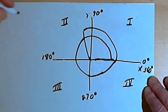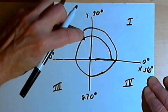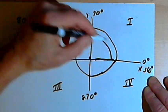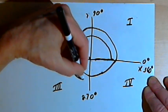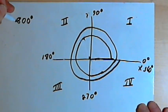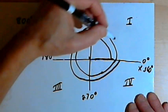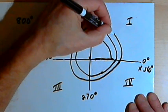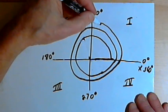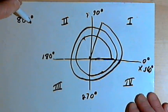Let's do an angle even bigger — 800 degrees. This one is going to go once around for 360, and then once more another 360, which would be a total of 720. After the 720 degrees, we need 80 degrees more to make 800. That will keep us in the first quadrant but towards the top of it. So this would be a rough sketch of an angle of 800 degrees.